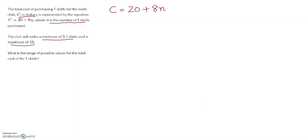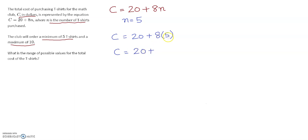We will substitute the minimum and maximum values of n to find the range of costs. When n equals 5 — the minimum order — I substitute 5 into the equation. First the multiplication: 8 times 5 is 40. Then 20 plus 40 gives C equals $60. So the minimum cost is $60.